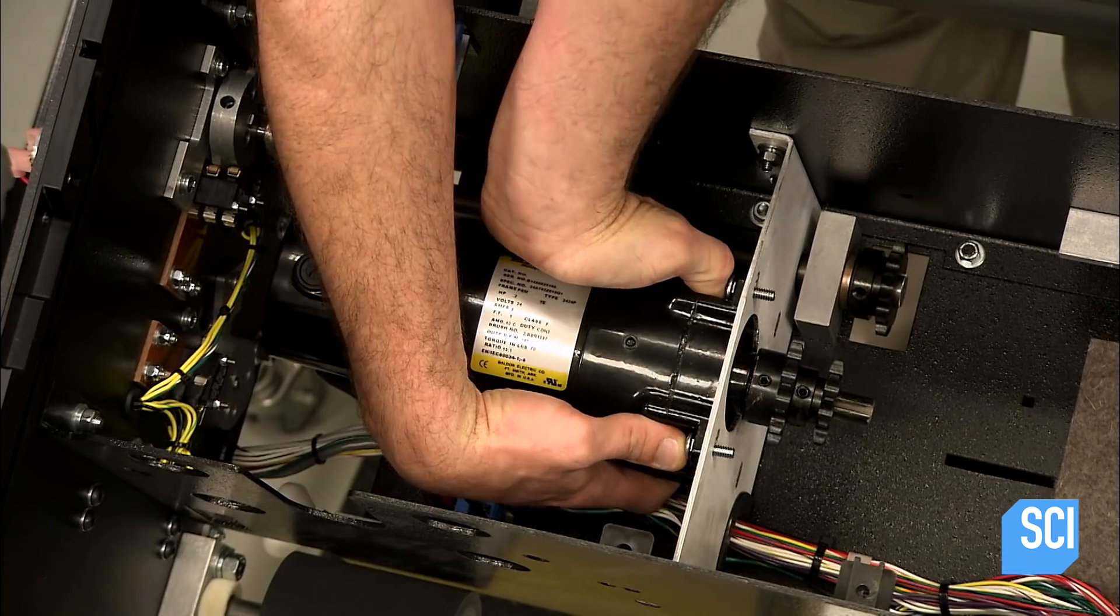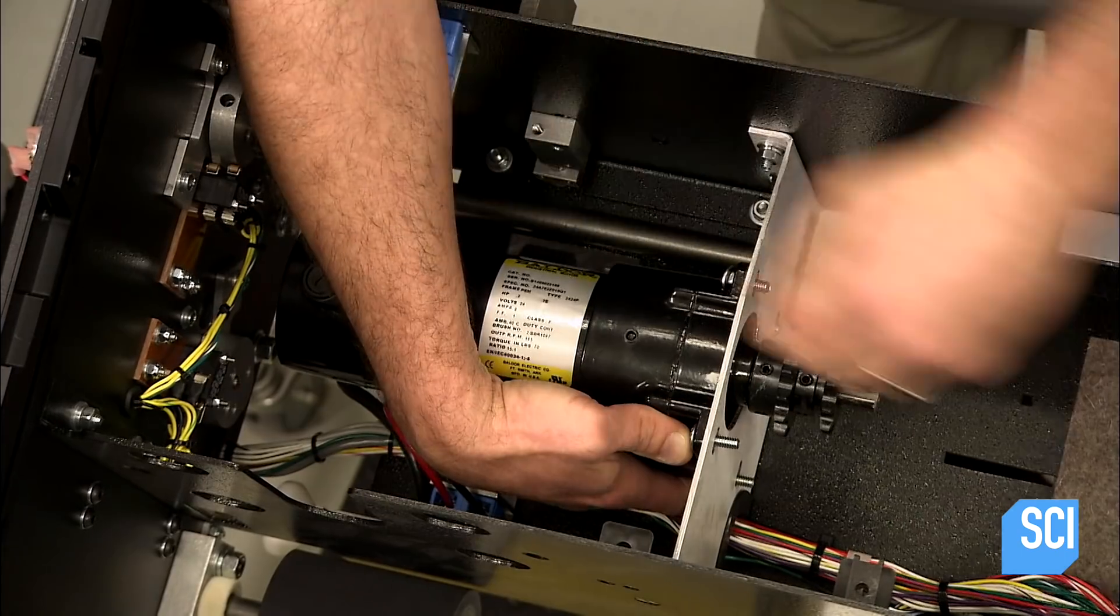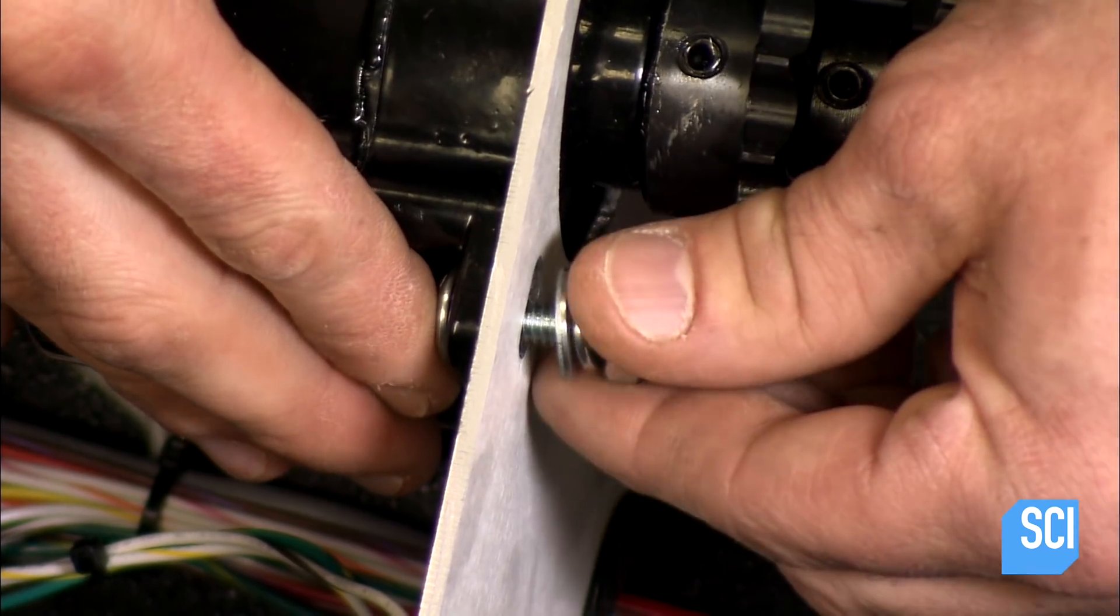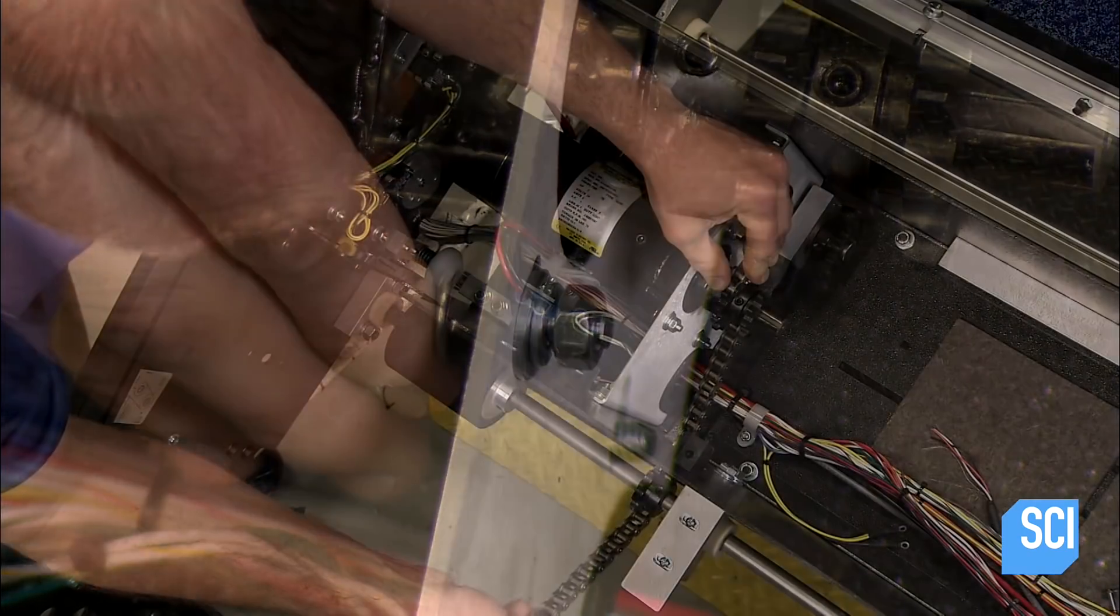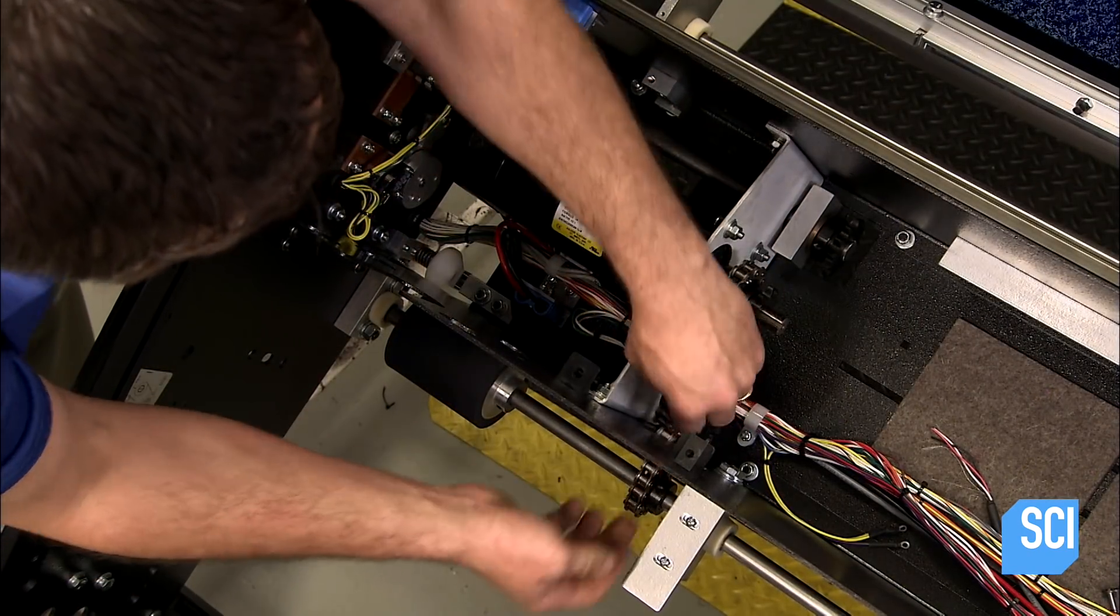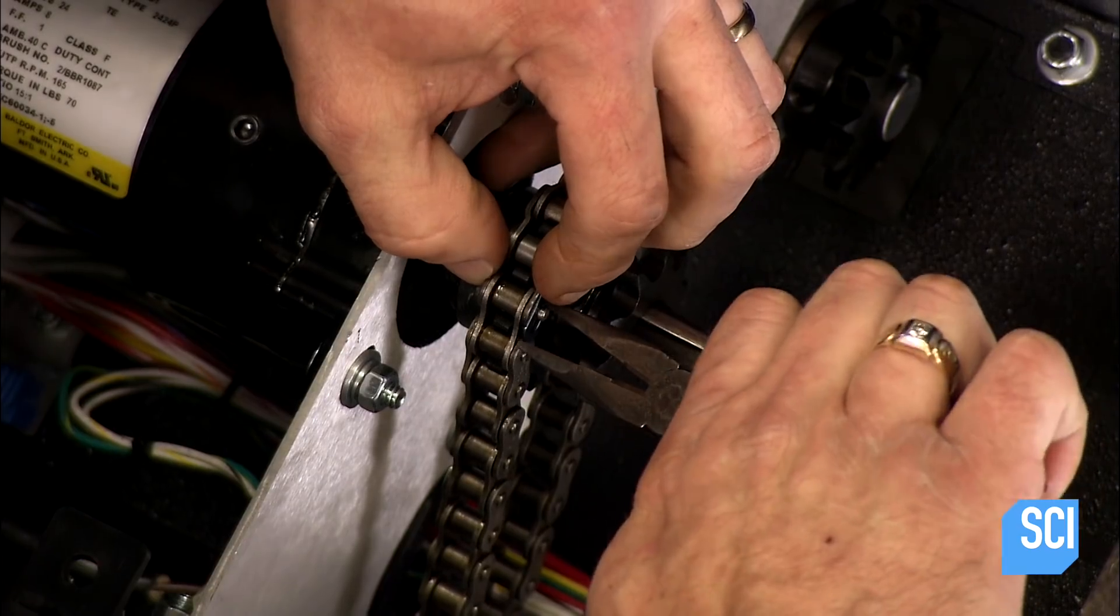He inserts the main drive motor and then secures it to an aluminum partition with the shaft protruding through the other side. He then wraps the drive chain around the sprockets of the shaft.